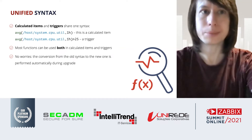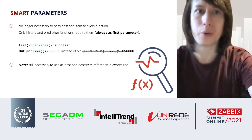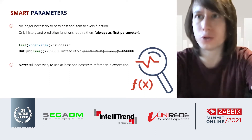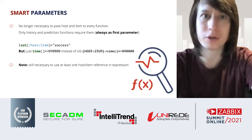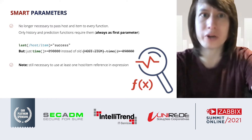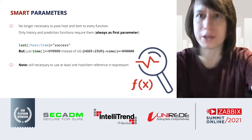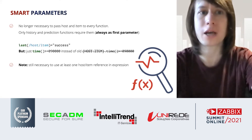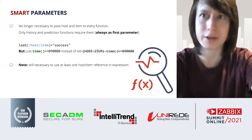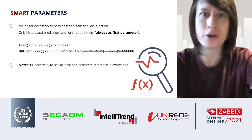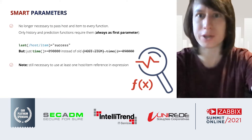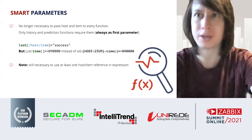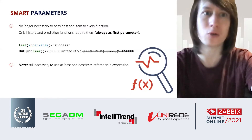One more important thing: it's no longer necessary to pass a host and item reference to every function. Now only history and prediction functions require them, always as the first parameter. For functions like date, time, and now, you don't have to pass that unnecessary host and item reference. That makes reading expressions much simpler and they look more logical.